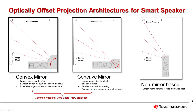A large housing is also required, along with a large opening, such that the projected light rays are not blocked. It is common that in a convex mirror design, the mirror can be found exposed and unprotected to avoid the large housing, which can pose many risks to the optic.